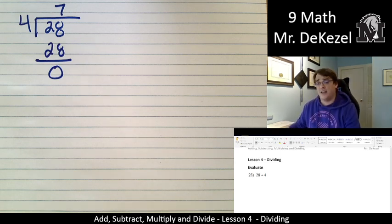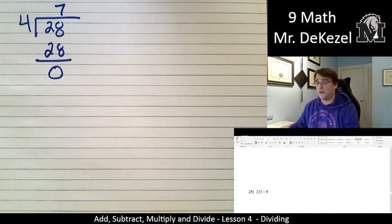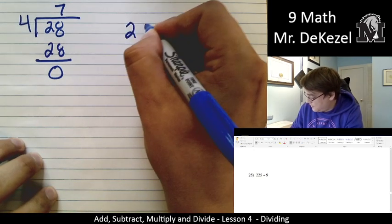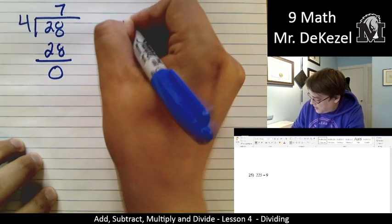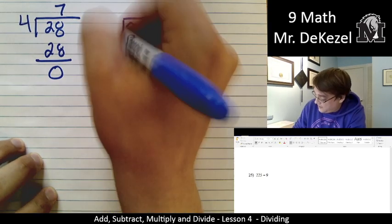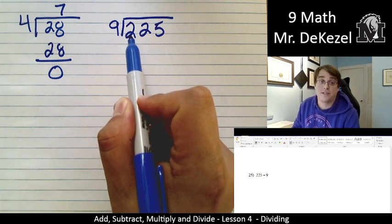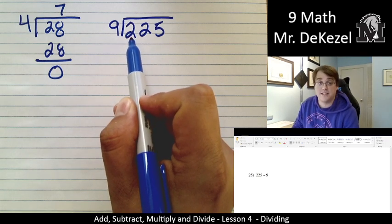If you think that's super easy, let's get onto a few slightly more difficult ones. Let's go to 225 under the box and then we have 9 beside it. Does 9 go into 2? No, it does not, because we're working from left to right in this case.